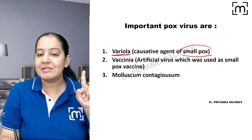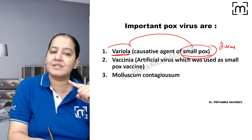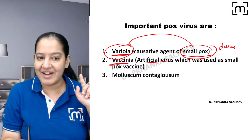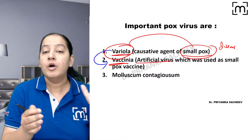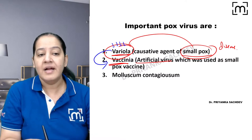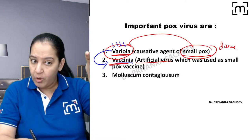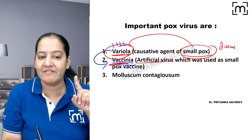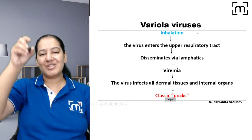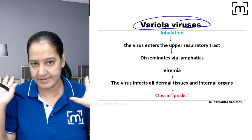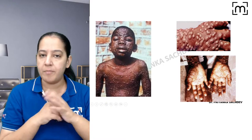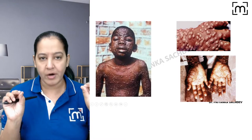The most important member is Variola, which is the causative agent of smallpox. The disease is smallpox; the causative organism is Variola. Vaccinia is not a natural virus — it is artificial. Humans prepared it from Variola by attenuating it to make it less pathogenic but more immunogenic, so it can be used as a vaccine. The third is Molluscum contagiosum.